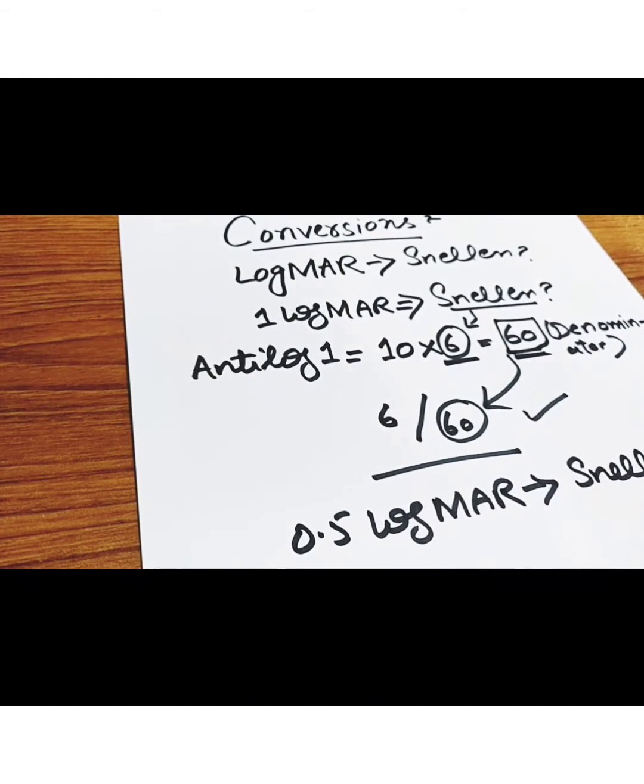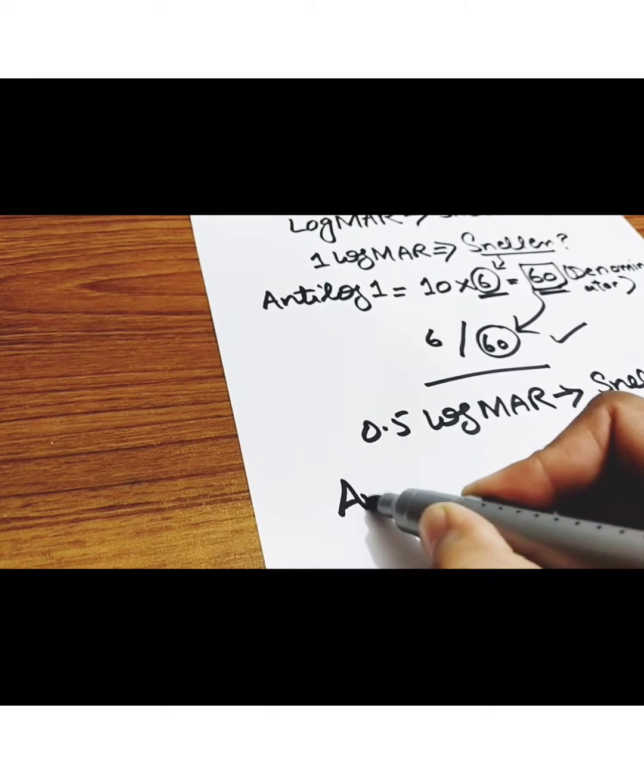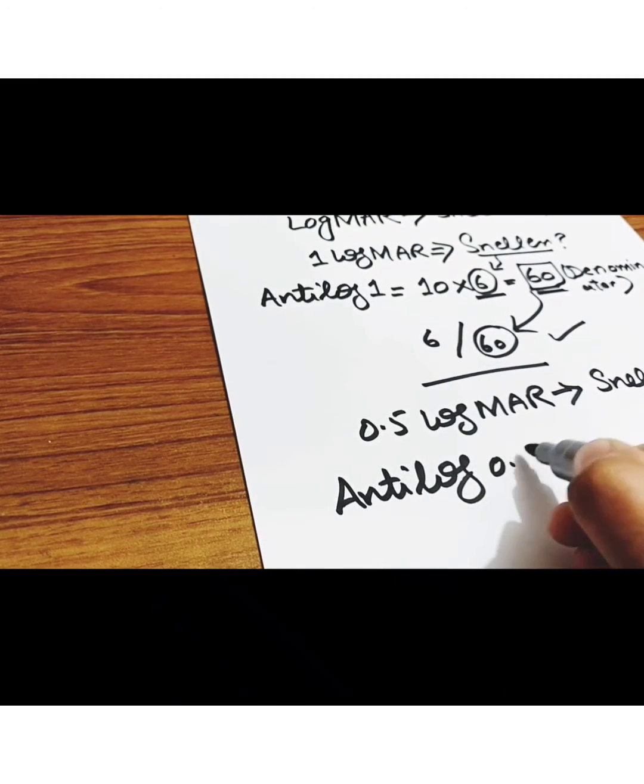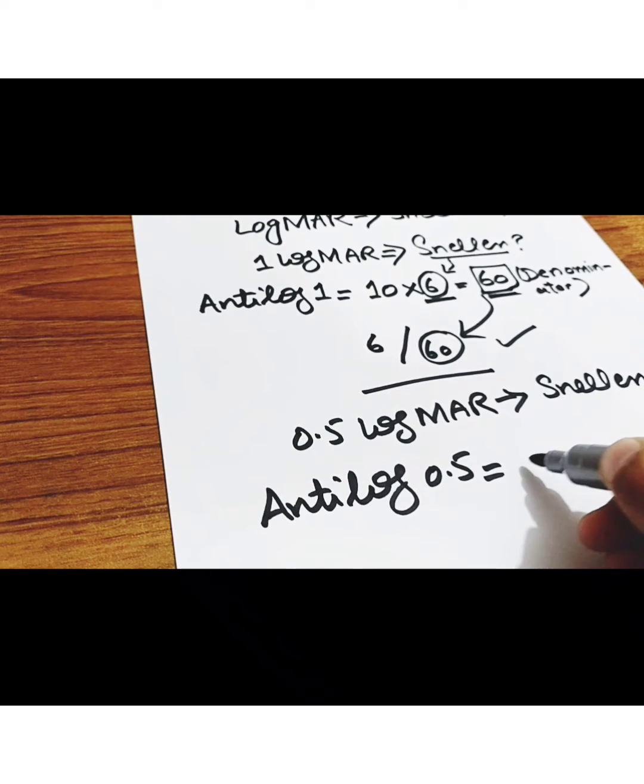In the next example, 0.5 LogMAR is converted into Snellen visual acuity. For this, take antilog of 0.5 LogMAR, it will become 3.1.